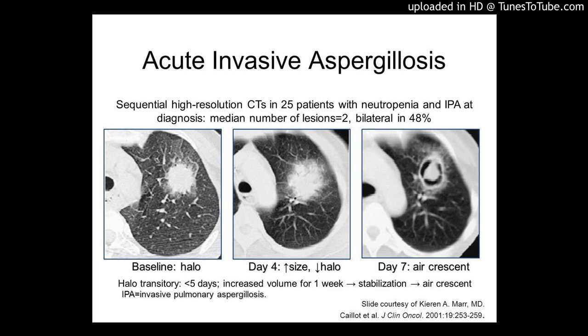Recent findings: Neutropenia and/or corticosteroid administration increase the risk of invasive infections, and the majority are due to Aspergillus fumigatus.